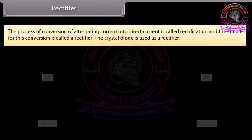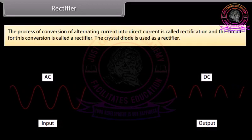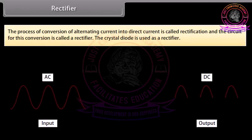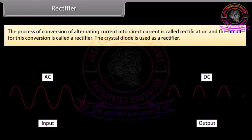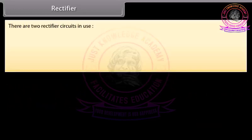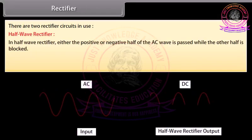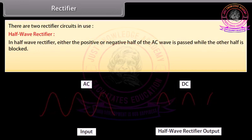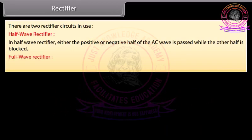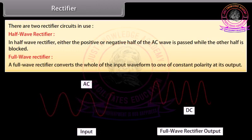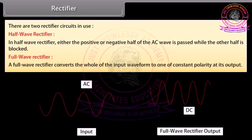Rectifier: the process of conversion of alternating current into direct current is called rectification, and the circuit for this conversion is called a rectifier. The crystal diode is used as a rectifier. There are two rectifier circuits in use: a half-wave rectifier, in which either the positive or negative half of the AC wave is passed while the other half is blocked; and a full-wave rectifier, which converts the whole of the input waveform to one of constant polarity at its output.